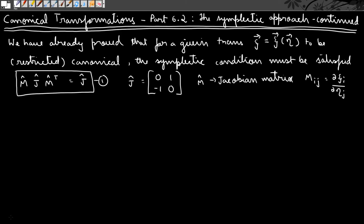In our previous lecture we already proved that for a given transformation psi, which is a function of the old coordinates, for this transformation to be a restricted canonical transformation the symplectic condition must be satisfied. The symplectic condition is a matrix equation which relates the Jacobian matrix M with the matrix J, given by equation 1: M J M-transpose equals J.